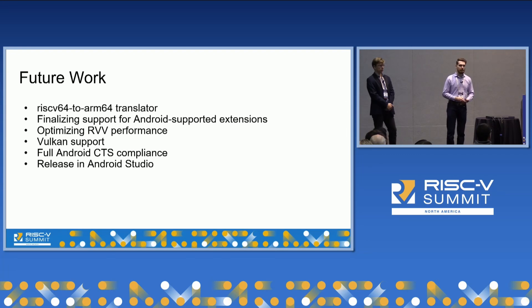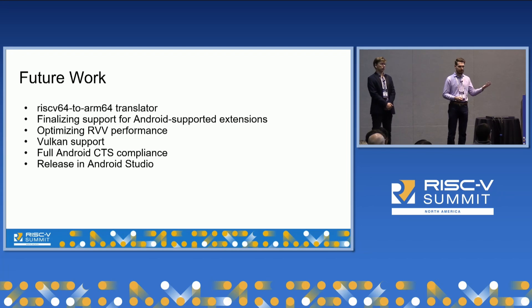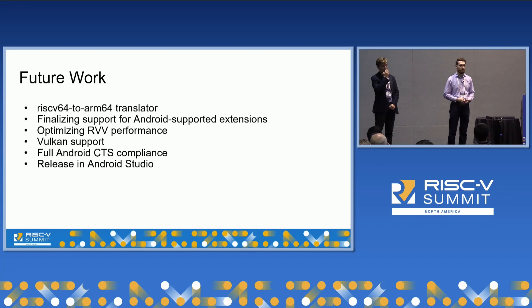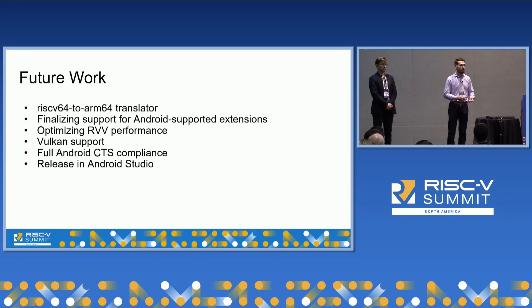Looking forward, we're currently going full steam ahead on implementing support for ARM hosts, so that developers using something like an Apple Silicon device will have access to the same level of performance as those using Intel devices. Once the Android NDK ABI for RISC-V and the set of included extensions has been finalized, we'll need to implement those. As Lev mentioned, our vector performance is not great right now and doesn't leverage host vector SIMD extensions. We also need to implement Vulkan support. From there, we can work toward full Android CTS compliance and shipping pre-built emulator images you can download and use directly in Android Studio.